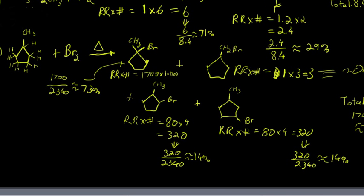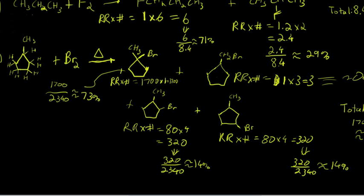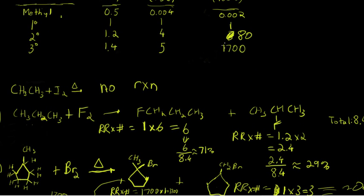So even though bromination heavily favors tertiary hydrogen abstraction over either primary or secondary, remember, looking at the table, the ratio of tertiary to primary is 1700 to 1, secondary to primary is 1700 to 80. So for bromination, the ratio of tertiary to secondary is about 1700 to 80.